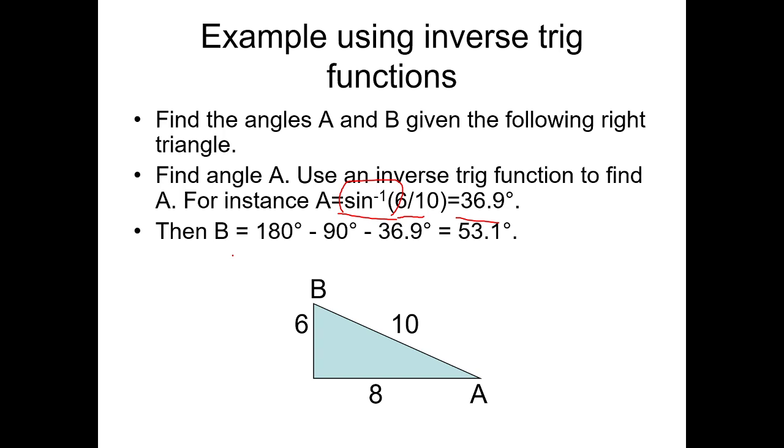And then for B, in a right triangle, you have 180. So, B is 180 minus 90 minus 36.9. So you can now find the angle B.